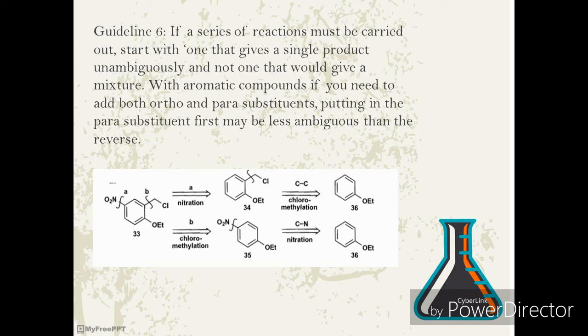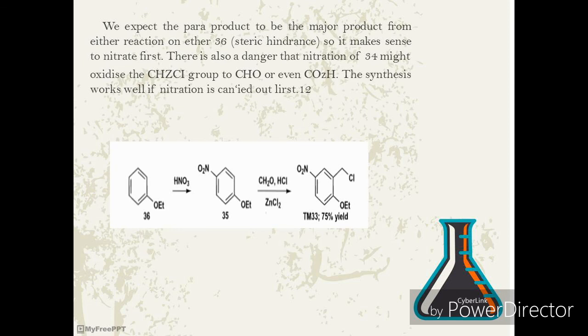Compound 33 was needed to make some anti-malarial drugs. We prefer not to disconnect the OEt group, guideline 3, and there are good reactions - nitration and chloromethylation - that would go in the right position, ortho or para, to the activating OEt group. Either disconnection A or B could be used. We expect the para product to be the major product from either reaction on ether 36, steric hindrance, so it makes sense to nitrate first. There is also a danger that nitration of 34 might oxidize the CH2Cl group to CHO or even CO2H. The synthesis works well if nitration is carried out first.